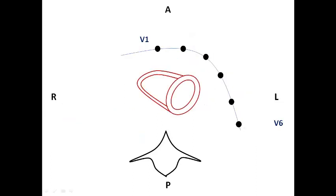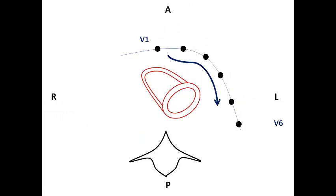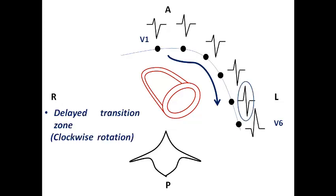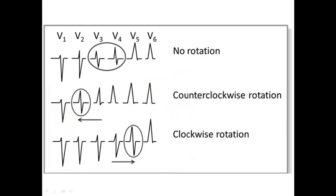In the opposite case, the heart rotates to the left side — sometimes due to hypertension or LV dilatation — so the transition zone is delayed until V5, which we call delayed transition zone or poor R-wave progression, and this is clockwise rotation. So counterclockwise rotation refers to early transition zone and clockwise rotation refers to delayed transition zone. These terms appear in MCQ questions, so we need to be familiar with them.